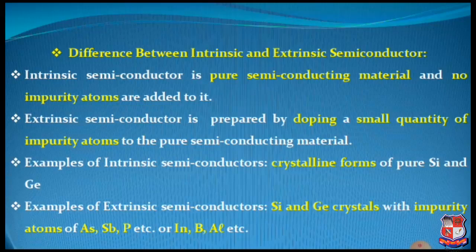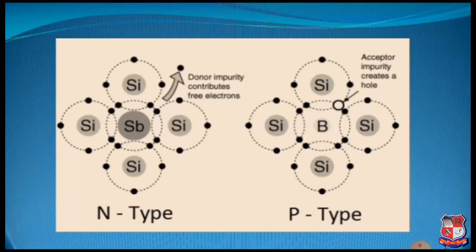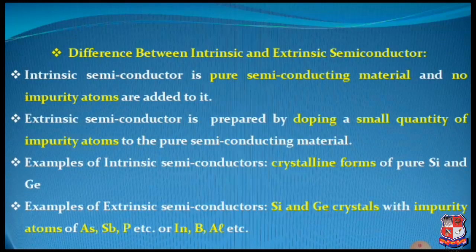The question will be asked in your GTU examination in such a way that they ask you to distinguish between intrinsic and extrinsic semiconductors. Number one: intrinsic semiconductor is pure semiconducting material and no impurity atoms are added into it. Extrinsic semiconductor is prepared by doping a small quantity of impurity atoms to the pure semiconducting material. This is most important.